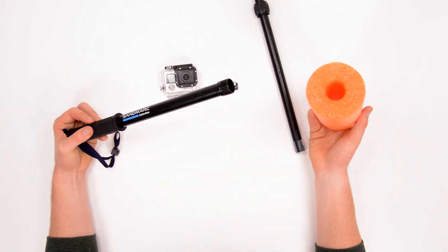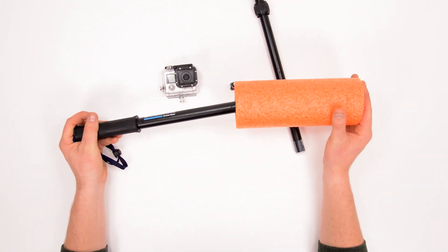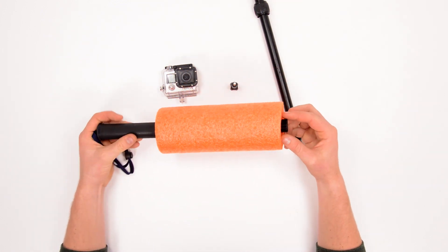So just like that, you can see mine's the right length. Then we're just going to take it and slide it through that hole that's already in the center of our pool noodle.